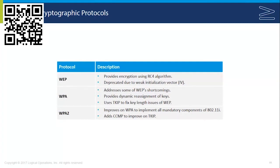WPA2, which is well over 10 years old, is the protocol we should be using. It adds CCMP — the Counter Mode with Cipher Block Chaining Message Authentication Code Protocol — which provides even greater security. It replaces TKIP and provides a 128-bit encryption key utilizing the Advanced Encryption Standard rather than WEP's RC4. WPA2 is the wireless security protocol that we should be using.